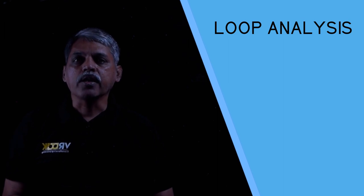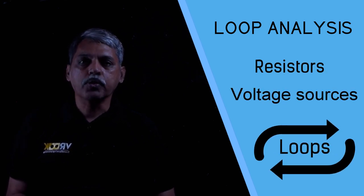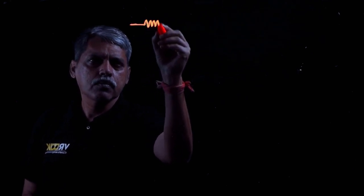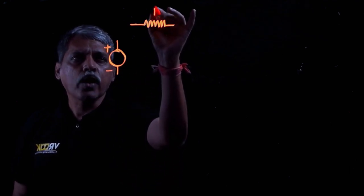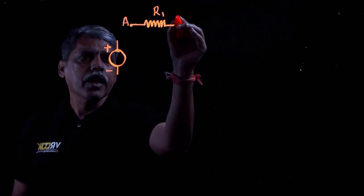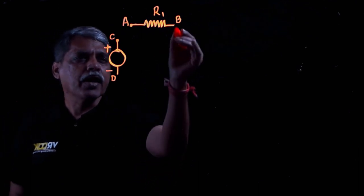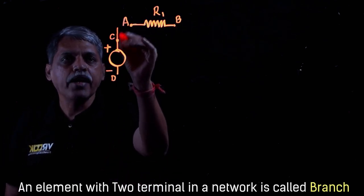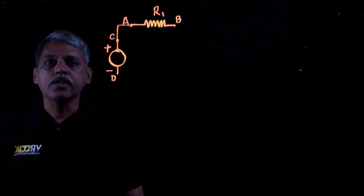In this video we will study about the loop analysis of DC networks. A DC network is an interconnected network in which resistors and voltage sources are connected to form loops. A resistor R has two terminals A and B, and a voltage source also has two terminals C and D. Any element with two terminals in a network is called a branch. A series connection of a voltage source and resistor is also called a branch.